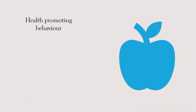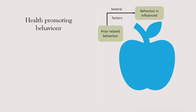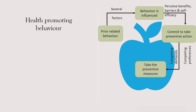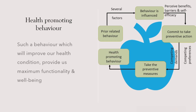Lastly, we have the health promoting behavior. The whole process starts from prior related behavior, then behavior is influenced by several factors — we perceive the benefits, barriers, and our self-efficacy. Then we commit to take the preventive action, navigating competing demands and competing preferences. All these must result in a behavior which improves our health condition, provides us maximum functionality and well-being — and that is called the health promoting behavior.